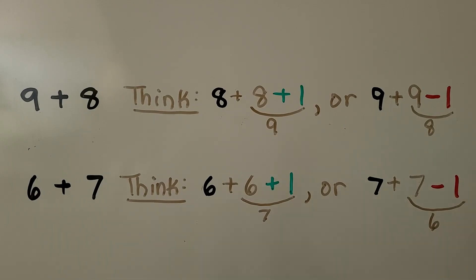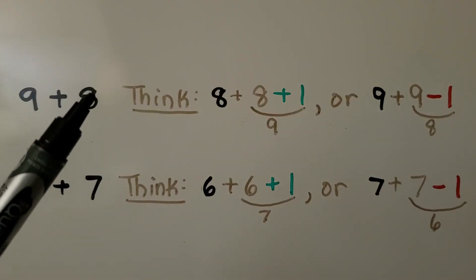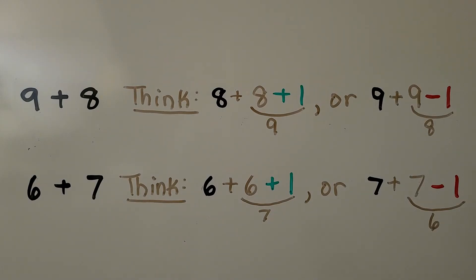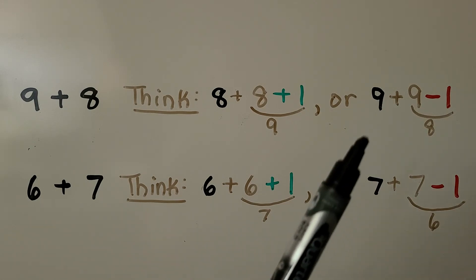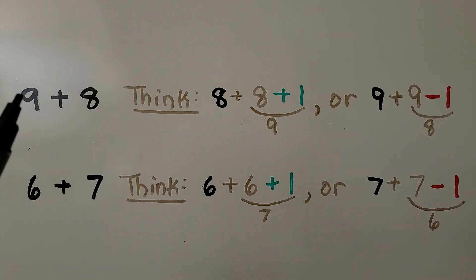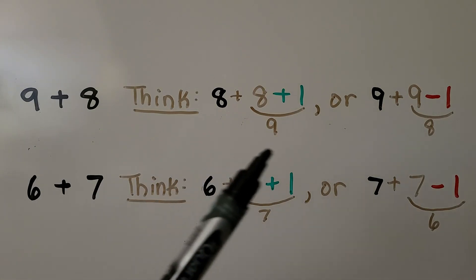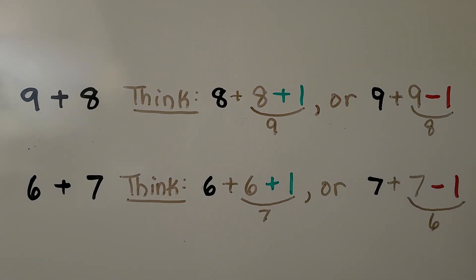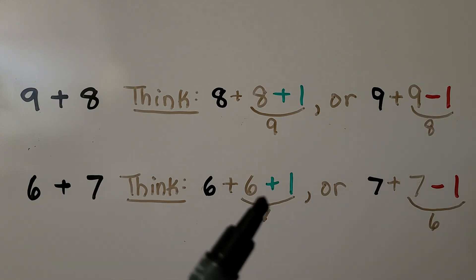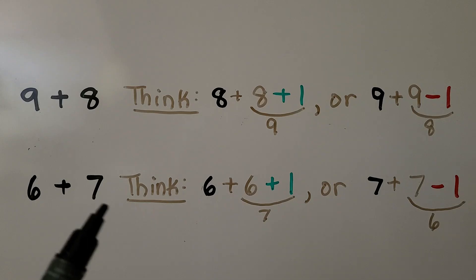For 9 plus 8, we can think: 8 plus 8 — one addend is the same. We use that 8, and do 8 plus 1 for the 9. So 8 plus 8 is 16, plus 1 more is 17. We could also do 9 plus 9 is 18 and take away one, giving 17. For 6 plus 7, we can think 6 plus 6 and add one more, or 7 plus 7 and take away one. Either way, 6 plus 7 equals 13.